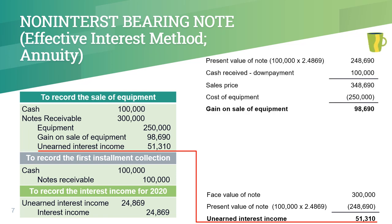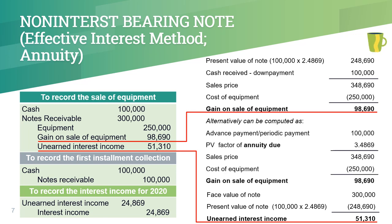The gain on sale amounting to 98,690 pesos is computed as the difference between the sales price and the cost of the asset sold. The sales price is the sum of the down payment and the present value of the note. In this problem, we can also solve for the sales price using the PV factor for annuity due, since the down payment and the periodic installments are equal.